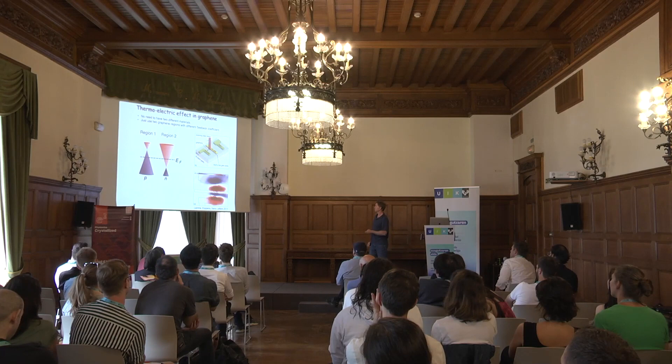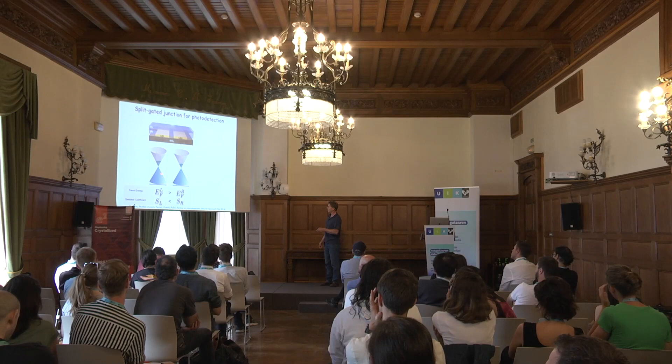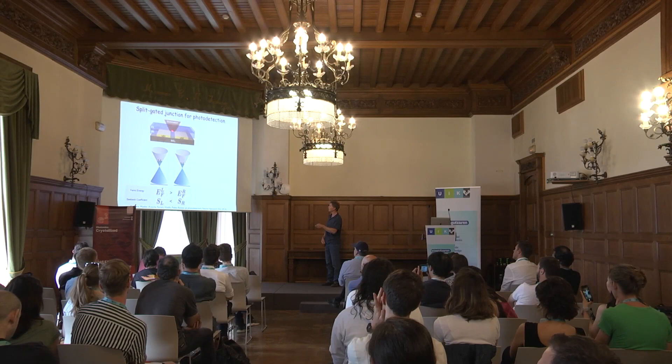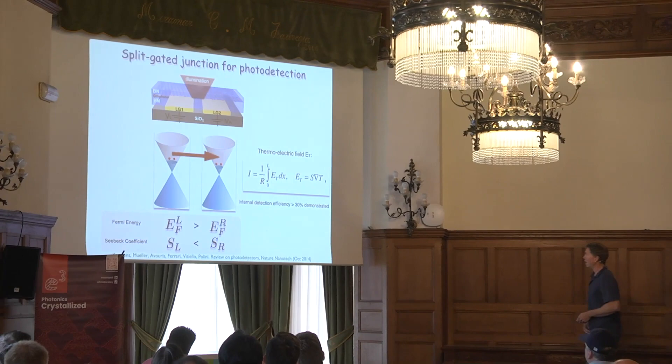This can be understood in a simple picture. I have graphene with slightly different doping, so the Seebeck coefficient is different. When I shine light on the system, I create some hot electrons, and a current starts to flow. That is called the photothermoelectric effect. The current is basically the integral of the electric field generated, which is the Seebeck coefficient times the gradient of the temperature.